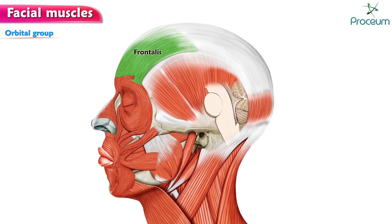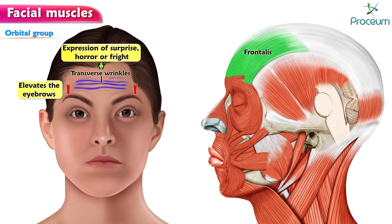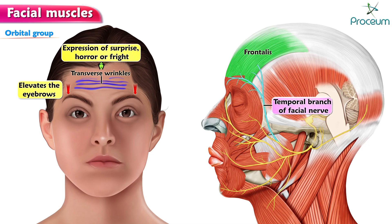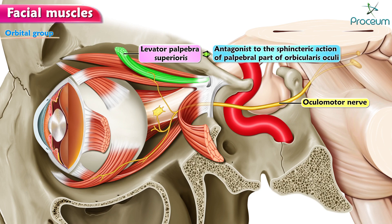Other muscles. Frontalis — already explained in the section on scalp. The frontalis elevates the eyebrows and produces transverse wrinkles on the forehead as an expression of surprise, horror, or fright. It is innervated by the temporal branch of the facial nerve. The occipital belly is innervated by the posterior auricular branch of the facial nerve. Levator palpebrae superioris is not a muscle of the face but one of the orbital muscles; it is innervated by the oculomotor nerve and hence described under orbit.